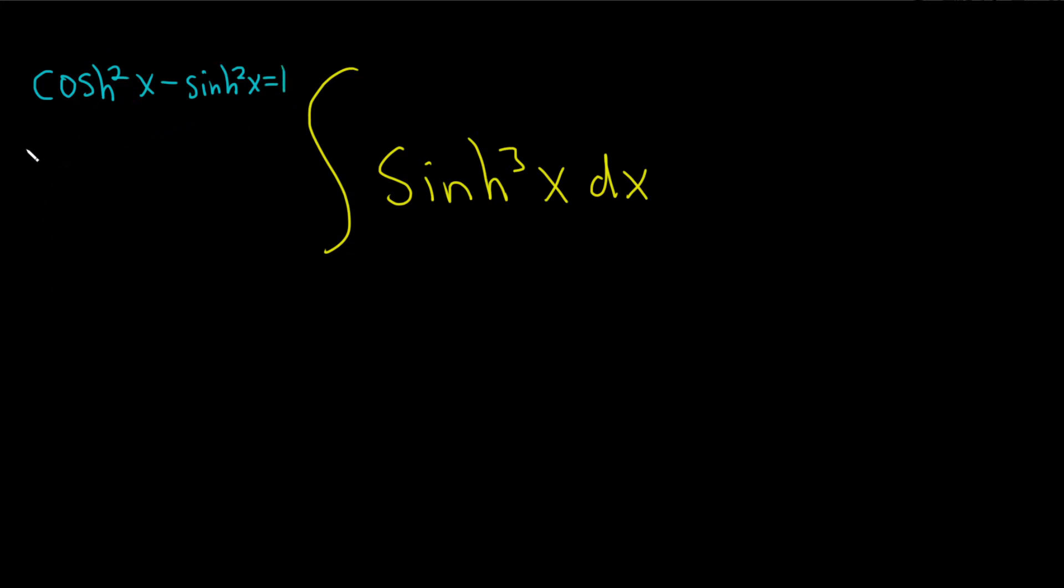we can solve this for sinh squared. So we can subtract cosh squared. That'll give us 1 minus cosh squared of x. And then multiplying by negative 1, we see that sinh squared of x is equal to cosh squared of x minus 1. So this is what I think we should try to use.